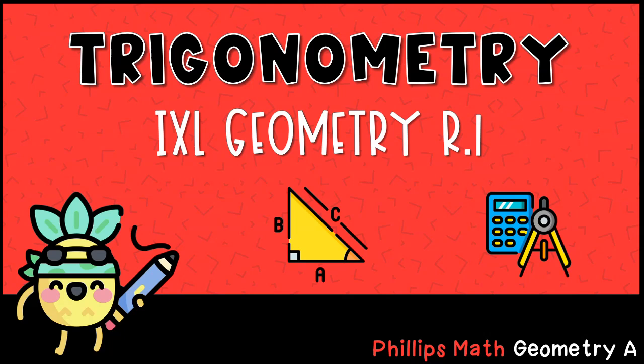We're going to take a look at some example problems from the IXL Geometry Module R.1, which uses the sine, cosine, and tangent functions to solve right triangles. Linked in the description below, you can find a PDF of the questions we're looking at in this video, along with the exact value reference card found further on in the video. Let's get started.